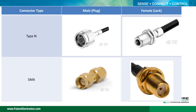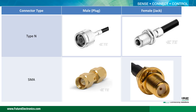After the antenna is selected, you need to keep the connector in mind. Type N, SMA, RPSMA, and UFL are the four most commonly used connectors with IoT RF modules.